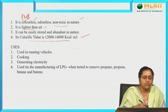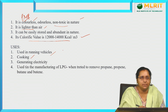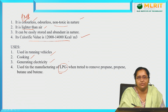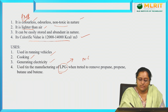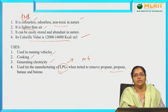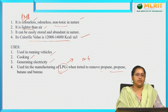Coming to its applications, it is very much useful for running vehicles — for transportation purposes. It can be used as a fuel for cooking. Using natural gas, we can generate electricity. It is also used in the manufacturing of LPG — liquefied petroleum gas, which is a secondary fuel. LPG is produced when natural gas is treated to remove its content of propane, propene, butane, and butene.